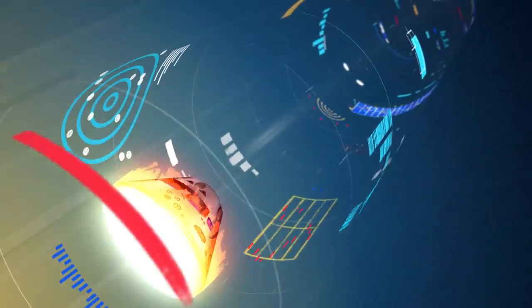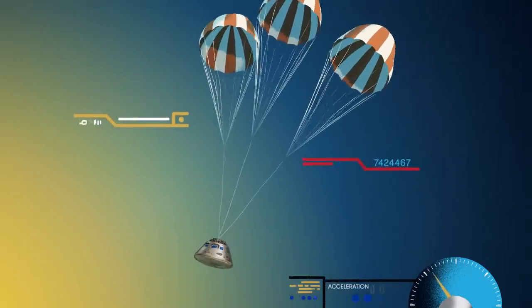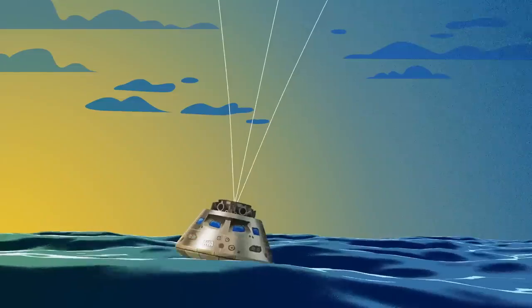With the Orion now at just 300 miles per hour, a series of parachutes uniquely tested and produced for this moment deploy, decelerating the craft to just 20 miles per hour for splashdown.